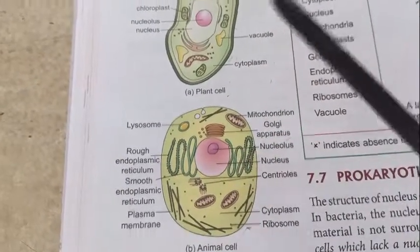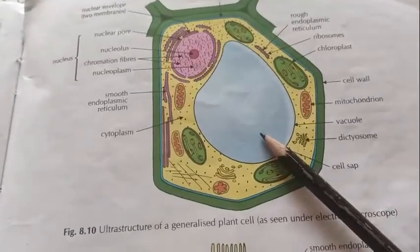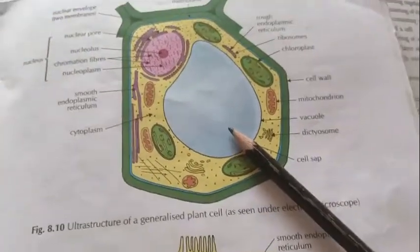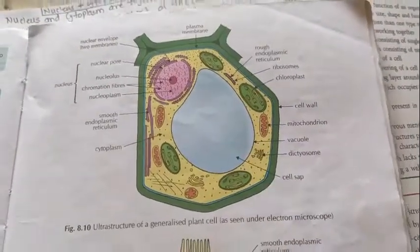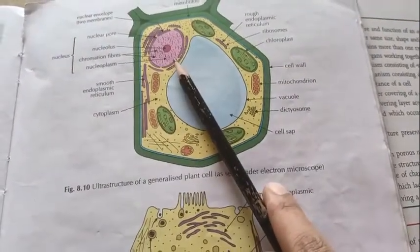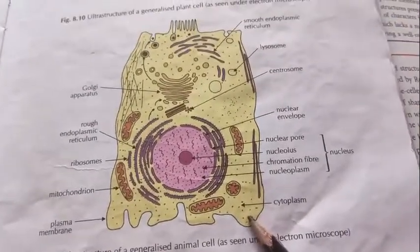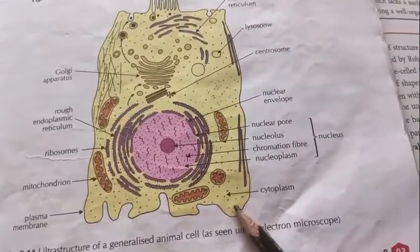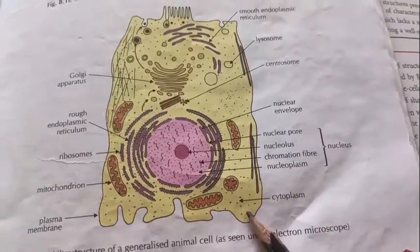Next we will discuss vacuoles, which is very important. In the plant cell you can see that the vacuole is very large — most of the area of the plant cell is covered by the vacuole, and it pushes the nucleus towards the periphery. In the animal cell, vacuoles are present but they are very few in number and very small.